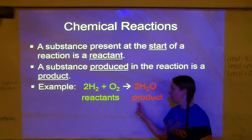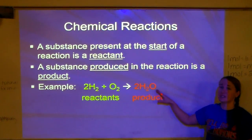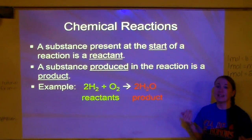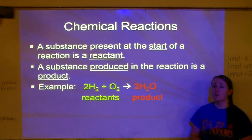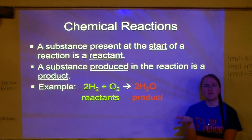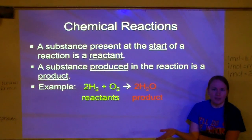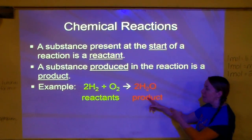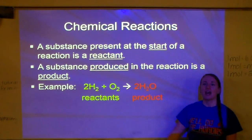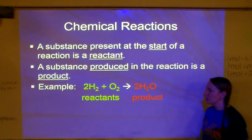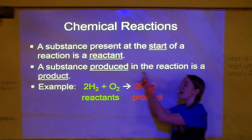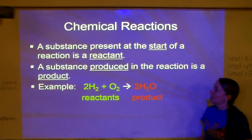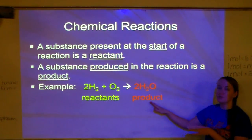A lot of people get reactants and products mixed up throughout the whole year, and later it becomes a big problem. Think of it this way: I can't start with a product. If I'm going to bake a cake, do I go to the pantry and pull out a cake? No — that's what I'm trying to make, so that's my product. I would get out eggs, flour, and sugar — my reactants — and then make my cake. You can't start with the product; that's what you're making. Reactants react to produce products.